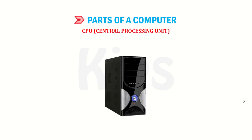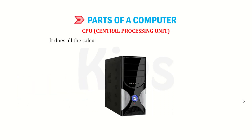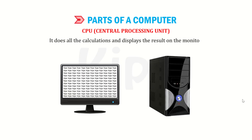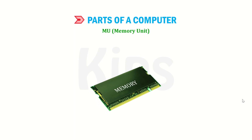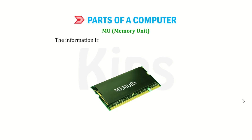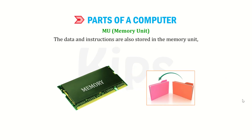The CPU is the brain of a computer that processes all the instructions given to the computer. It does all the calculations and displays the results on the monitor. It also stores a lot of information. A CPU is made up of three main parts. In the memory unit, we can store information or data according to our needs. The information in the memory can be changed and recalled on the screen when needed. The data and instructions to be processed are also stored in the memory unit.